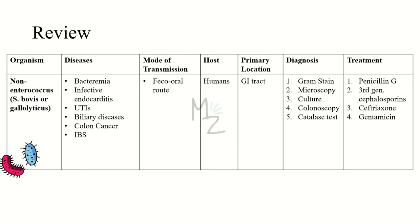All right guys, let's review everything really quick. We studied non-enterococcus, strep bovis or gallolyticus today. It is responsible for causing bacteremia, infective endocarditis, UTIs, biliary diseases, colon cancer, or IBS, the inflammatory bowel syndrome. It is transmitted via fecal-oral route mainly but sometimes maybe via genitourinary tract.